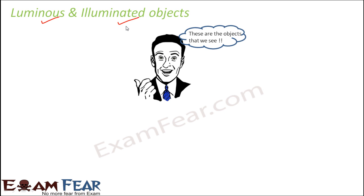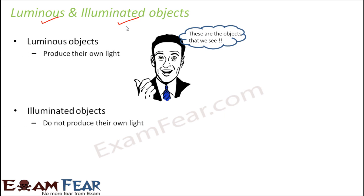So what are luminous and illuminated objects? Luminous objects are those objects which produce their own light — they have the ability to produce their own light. Can you think of an example? The first example that should strike your mind is the sun. The sun has its own light, so the sun is a luminous object. Any object which produces its own light, we are able to see that object.